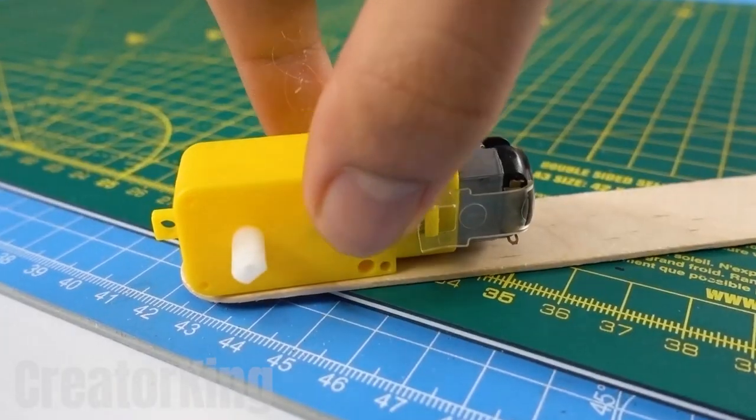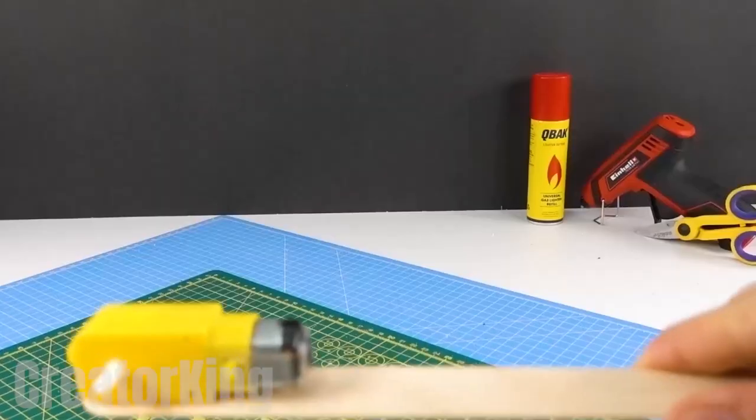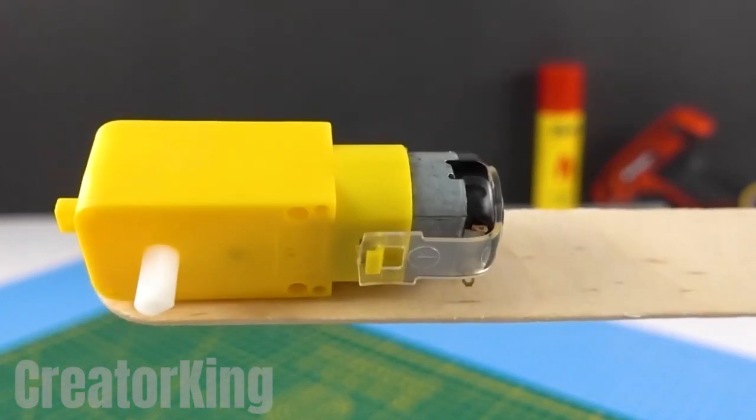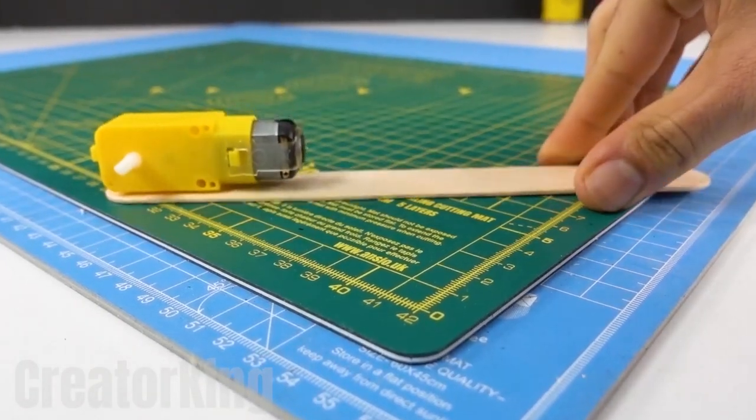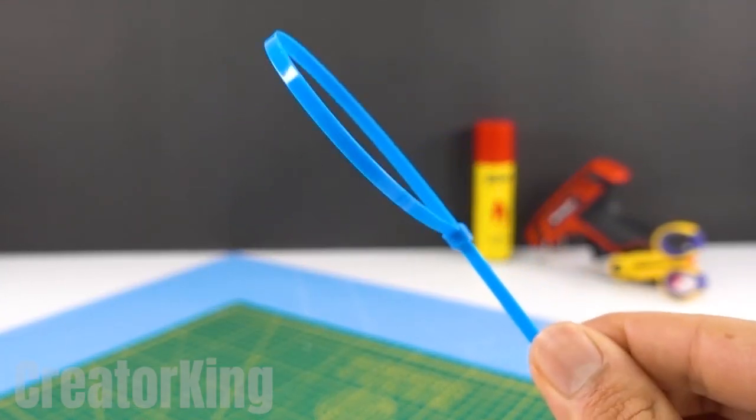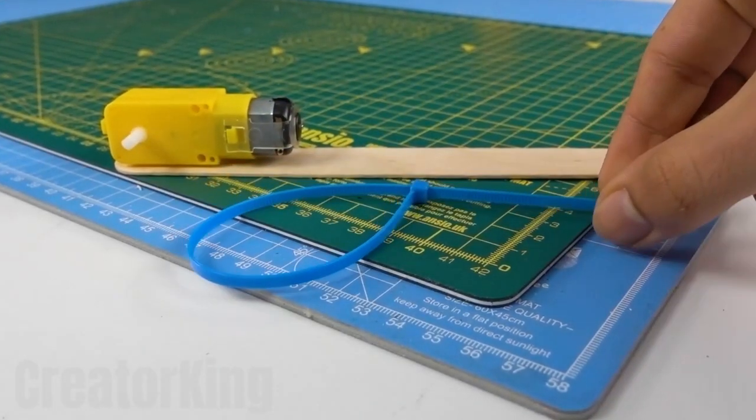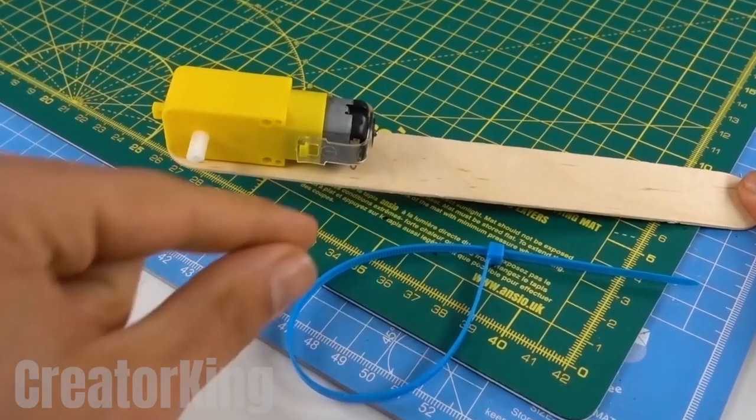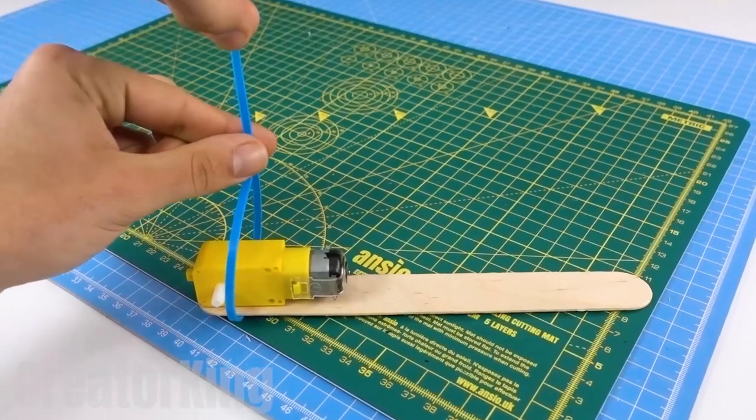To achieve our goal, start by applying instant glue to one end of the wooden stick and attach a toy motor to it. The pile of instant glue we used won't be enough, so get one of these plastic ties and put it around the small motor right in the middle like a seatbelt.